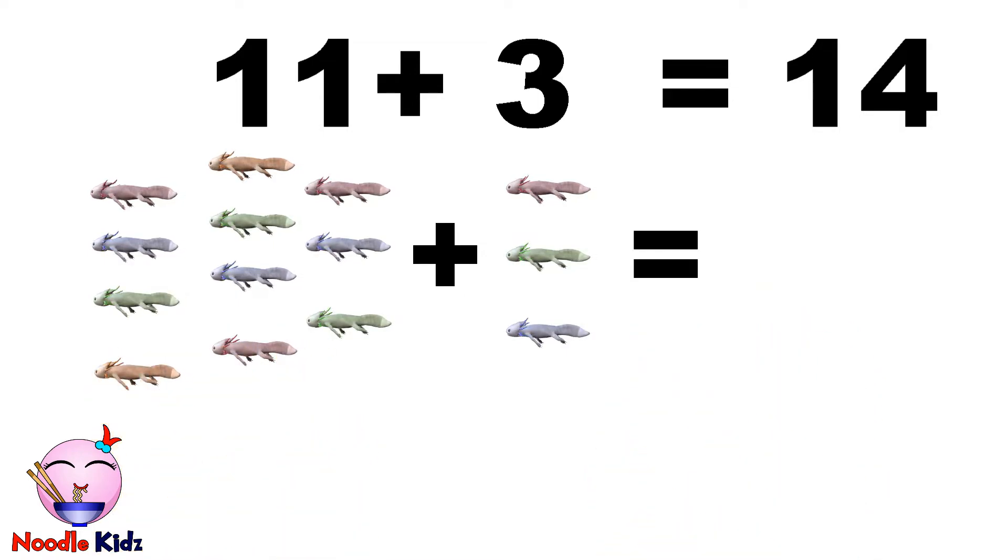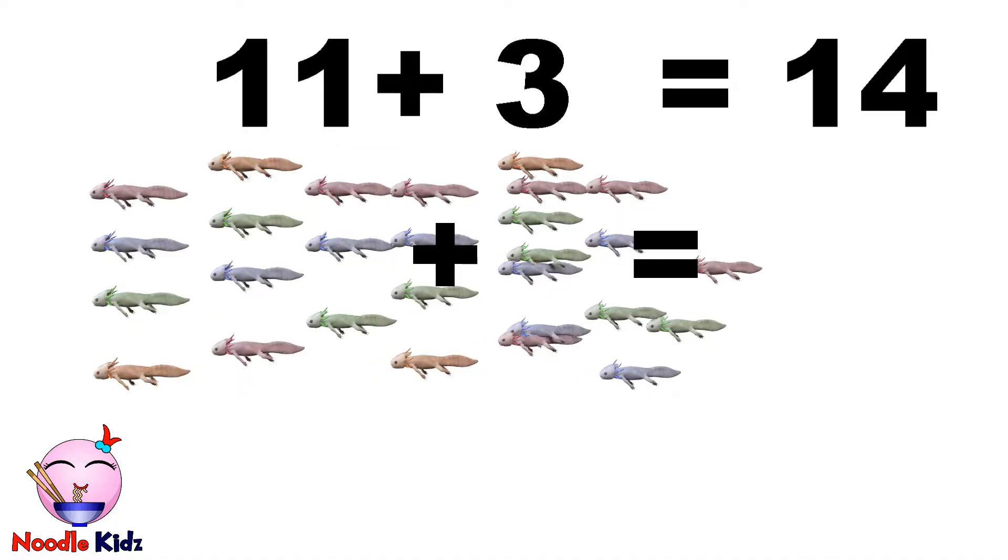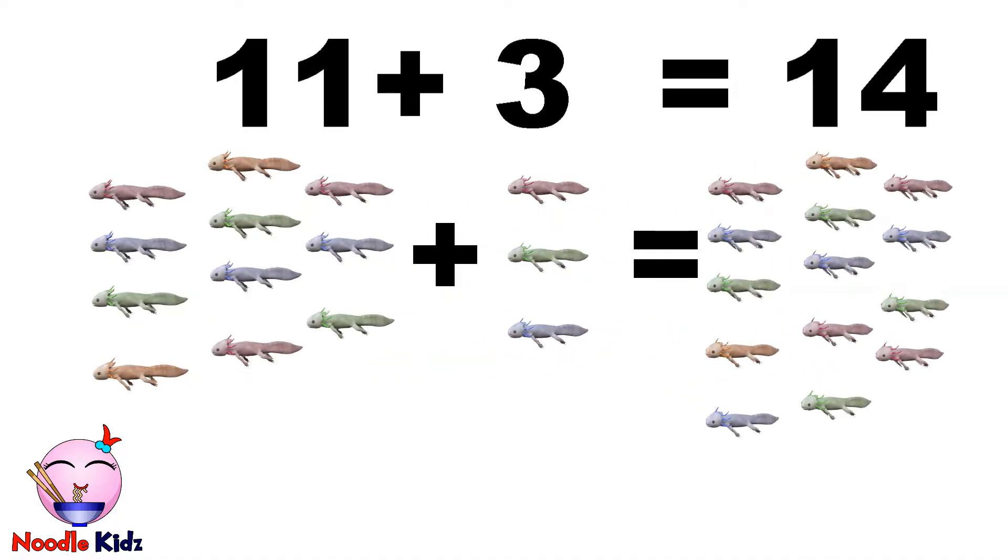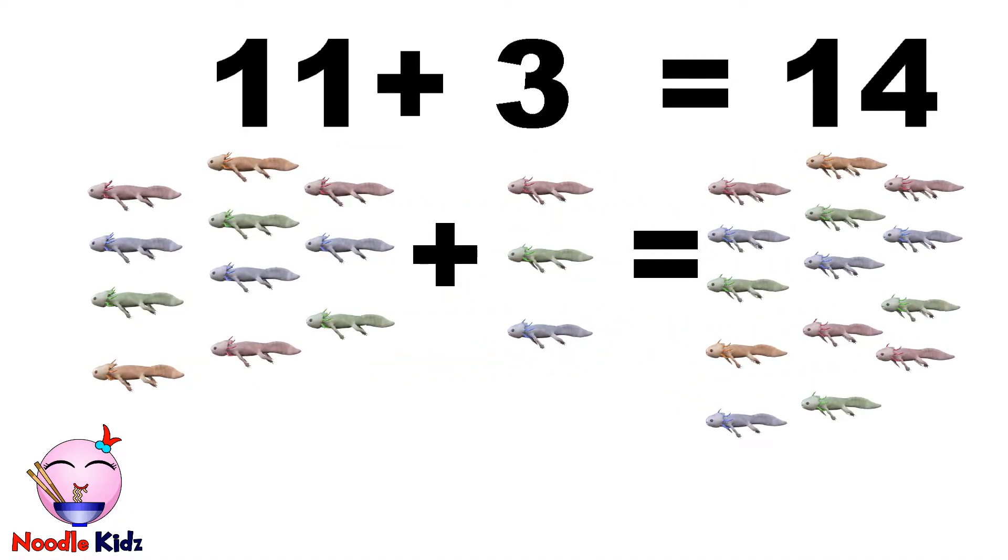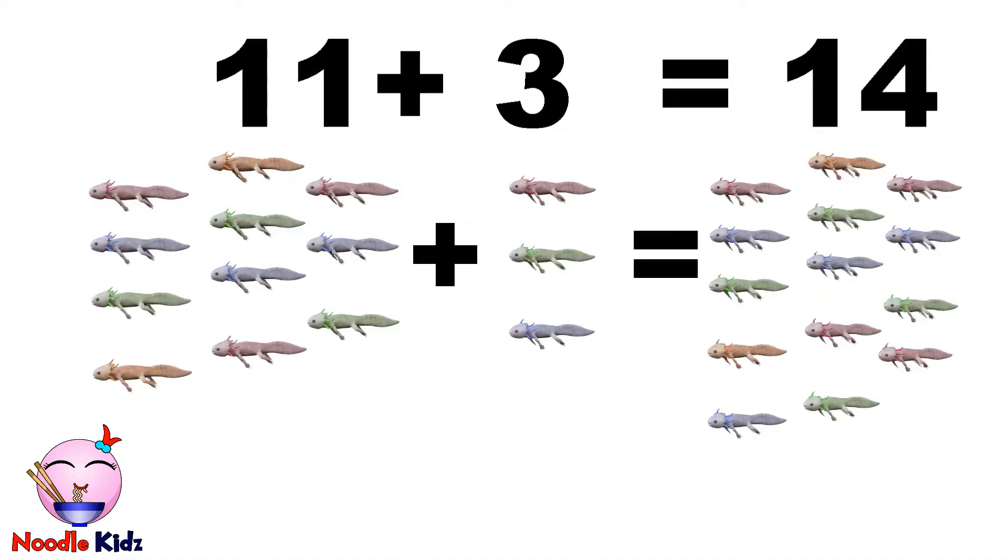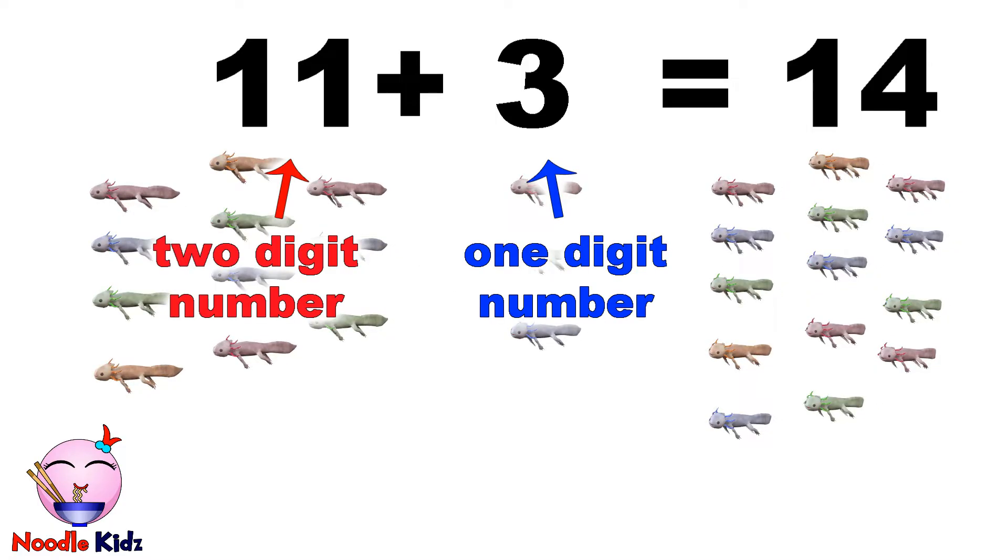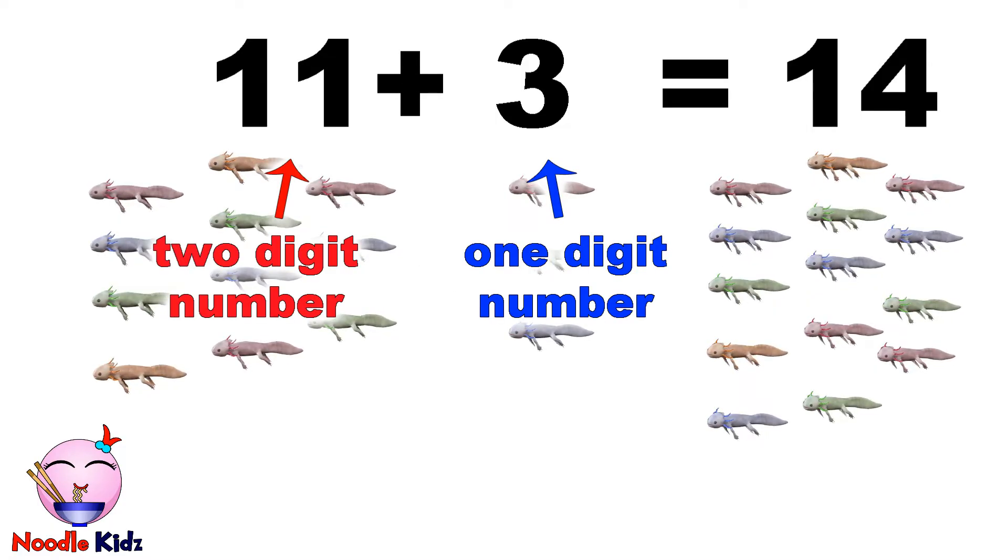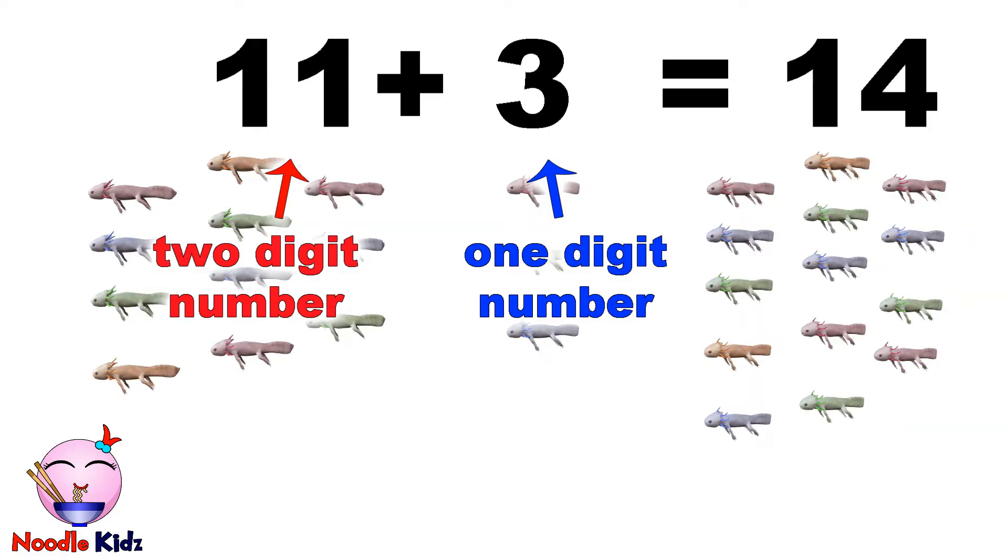So, 11 plus 3 equals 14. This is called adding a two-digit and a one-digit number. 11 is the two-digit number and 3 is the one-digit number.